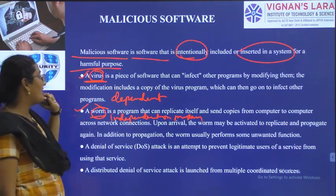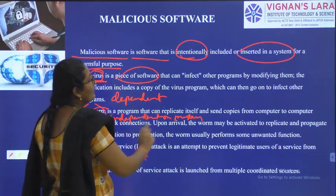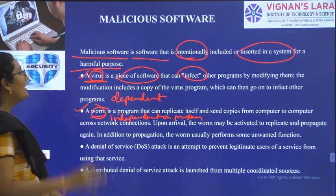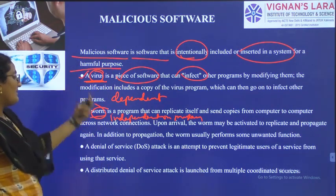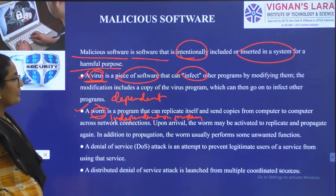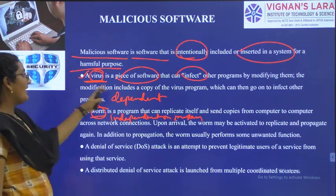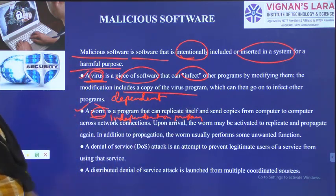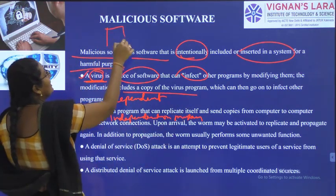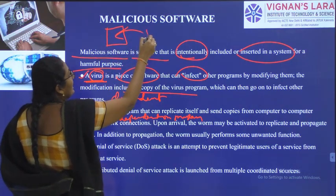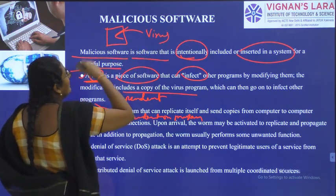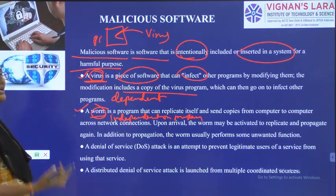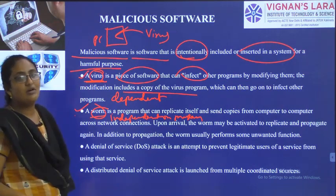How can we define a virus? Virus is a piece of software which will infect your system, causing harm by multiplying and replicating. Virus is a piece of software that will infect other programs by modifying them. This modification includes copying of virus programs, which can then go on to infect other programs. If somebody intentionally injects a virus into your PC, it can modify other files in your PC as well.